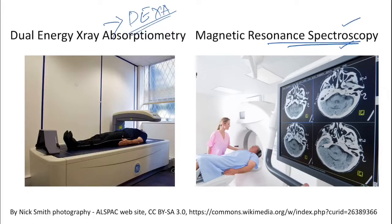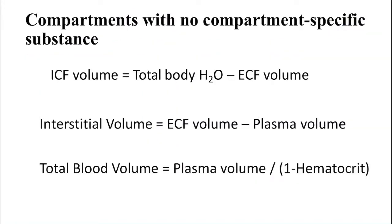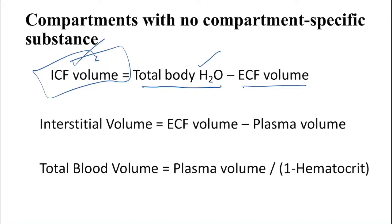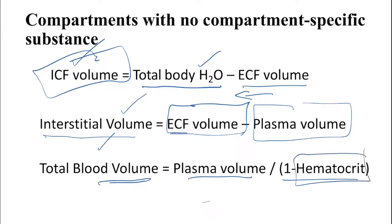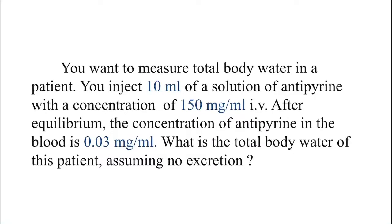We don't need to measure all compartments directly. If we measure total body water and ECF volume, we can directly calculate ICF volume. For interstitial fluid volume, there is no direct dye — whatever we inject also includes plasma — so we subtract plasma volume from ECF volume to calculate it. Total blood volume can also be calculated using plasma volume divided by (1 minus hematocrit), where hematocrit is the total volume of all cellular components in the blood. A practice question is provided for students to solve and post in the comments.